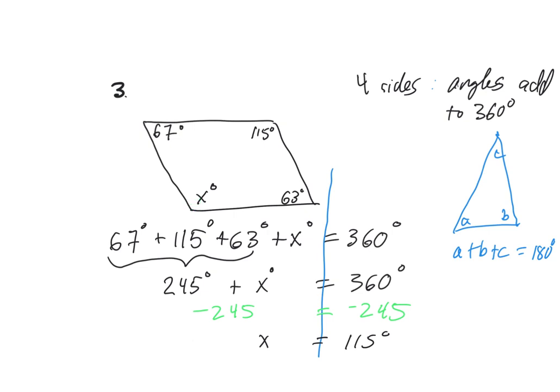Now, if I added them all up again, so if I do 115 plus 115 plus 67 plus 63 in my calculator, they all add up to 360, which they're supposed to, so I know that I did that one right.